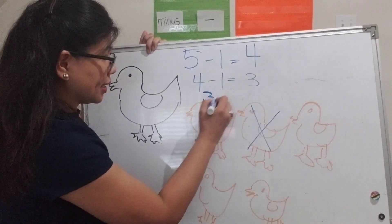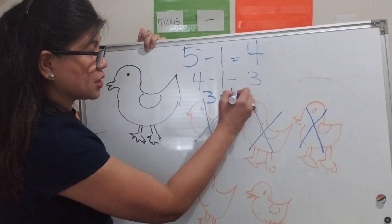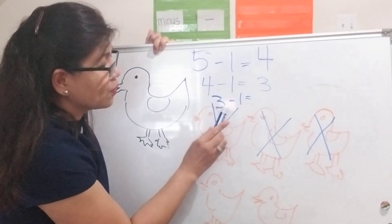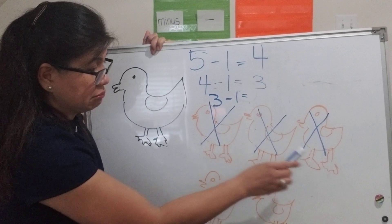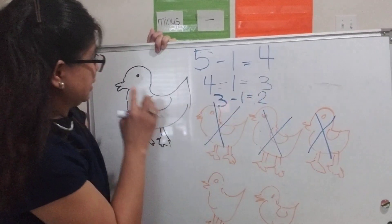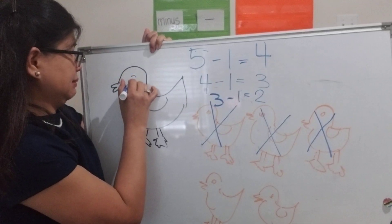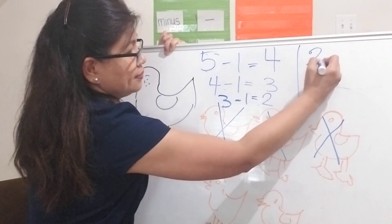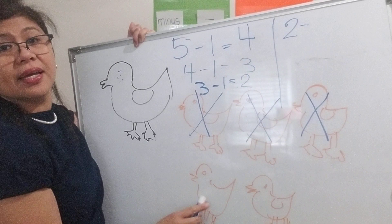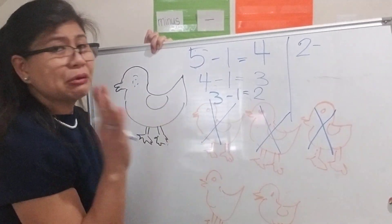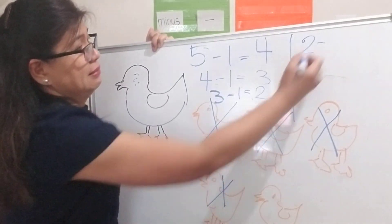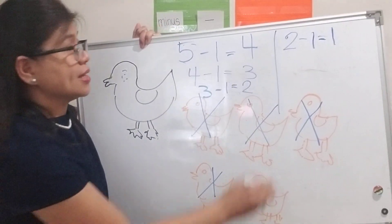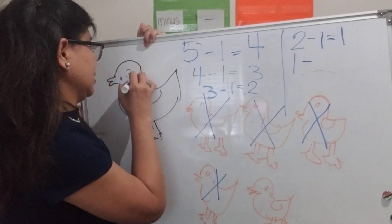If I have three ducklings and one goes away, how many ducklings are left? Three little ducks came out to play over the hills and far away. Mother duck said quack, quack, quack, quack — how many are left? Two. Mama duck is feeling sad now — she only has two ducklings. Two little ducks came out to play over the hills and far away. Mother duck said quack, quack, quack, quack — but only one little duck came back.